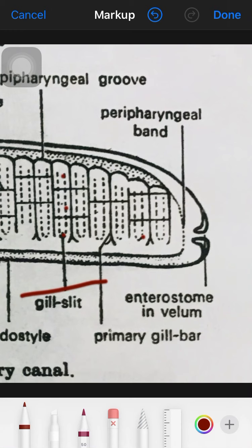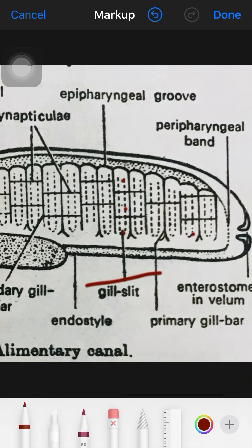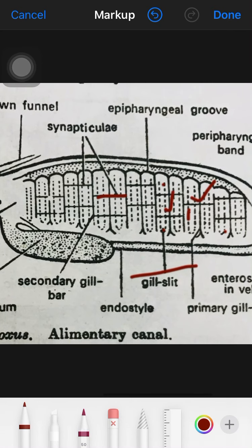These are gill slits and the gill slits are separated by what is simply called gill bars. This is primary, this is secondary. The primary and secondary gill bars are connected by what is called synapticulae.